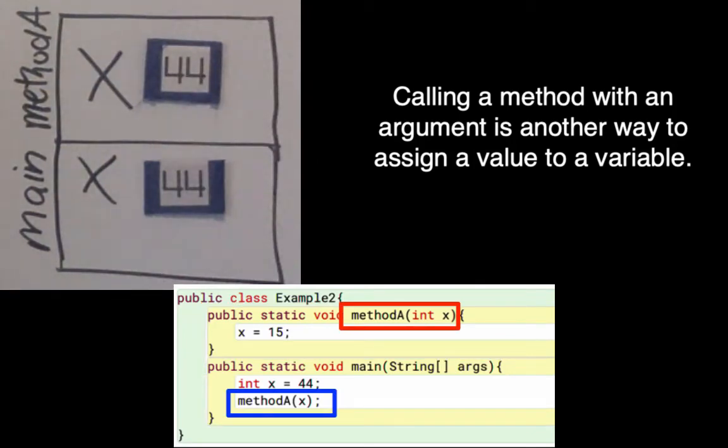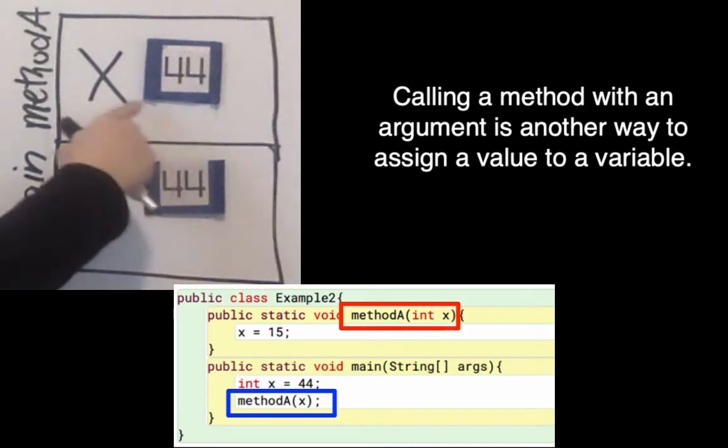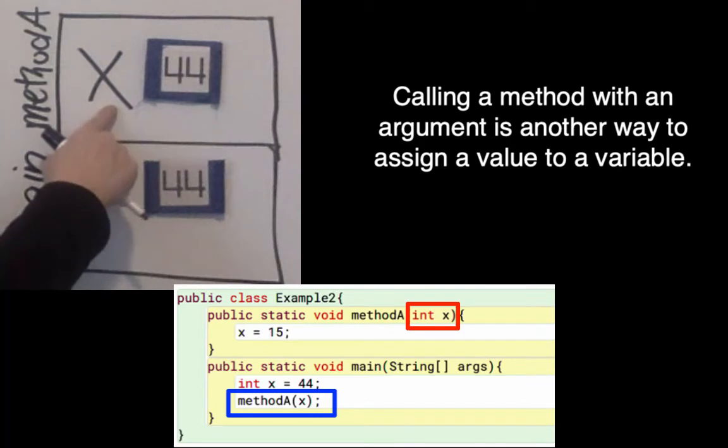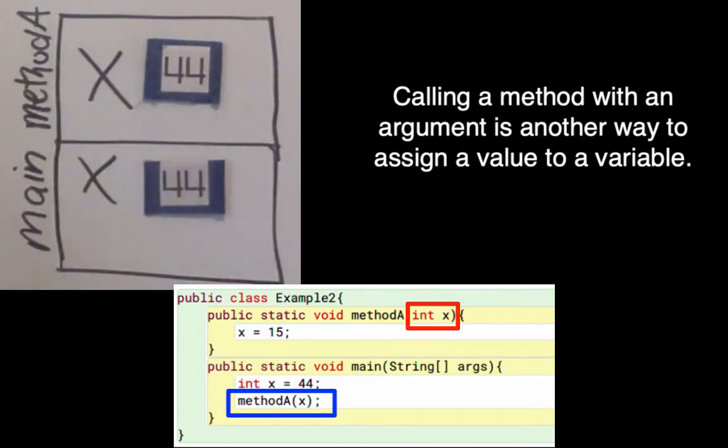I also want to draw your attention to the fact that passing this argument x to the methodA was another way of assigning a variable because the parameter x got set to the value that we passed in. I haven't executed the body of methodA yet.